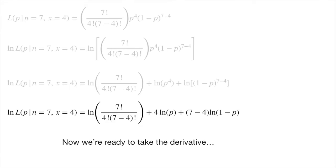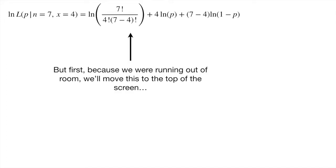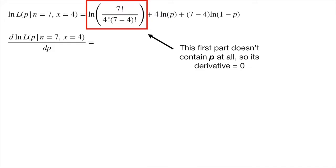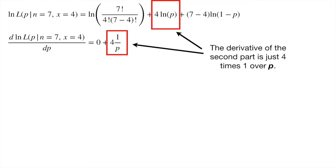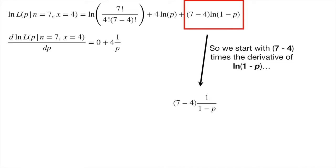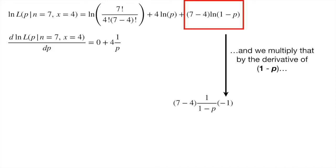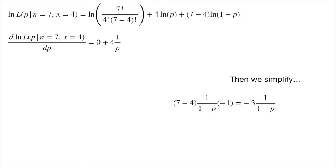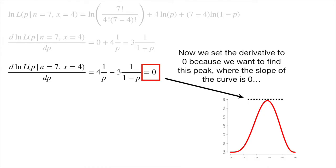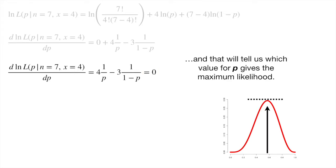Now we're ready to take the derivative. We'll move the equation to the top of the screen and take the derivative with respect to p. The first part doesn't contain p at all, so its derivative equals 0. The derivative of the second part is just 4 times 1 over p. The derivative of the last part requires the chain rule: we start with 7 minus 4 times the derivative of log(1 minus p), then multiply by the derivative of 1 minus p, and simplify. Now we set the derivative to 0 to find the peak where the slope equals 0, which tells us which value of p gives the maximum likelihood.